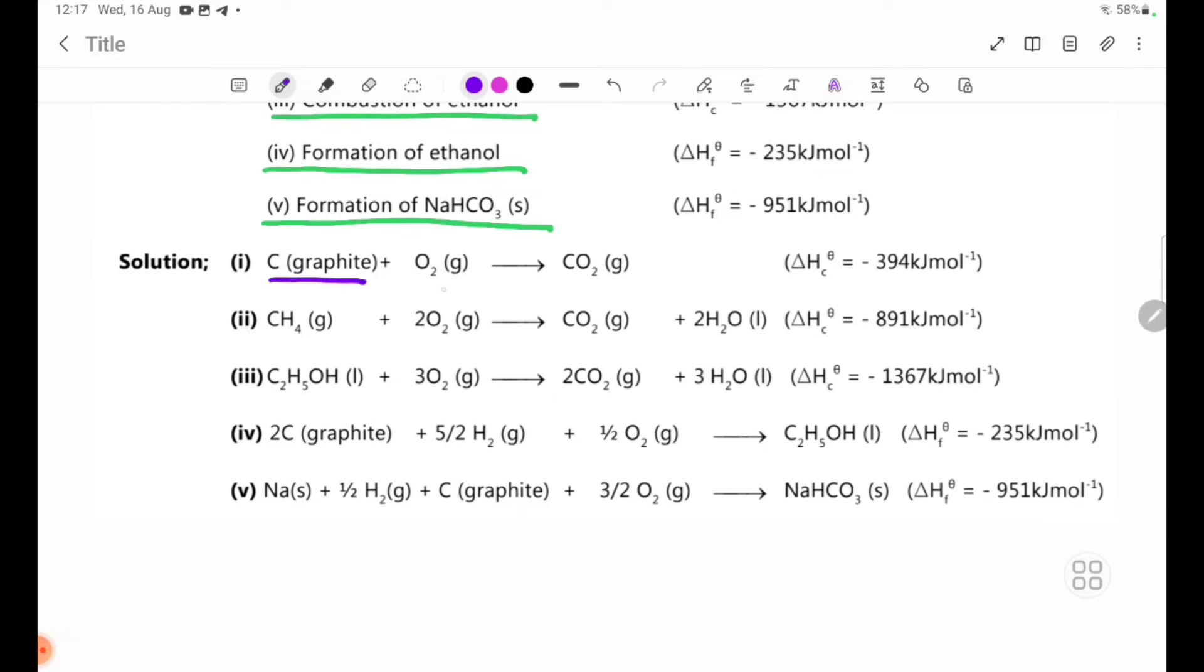Solution: Number 1. Carbon graphite plus O2 gas yields CO2 gas. Delta H theta C equals minus 394 kilojoules per mole.